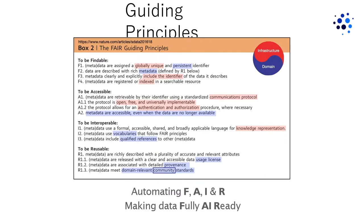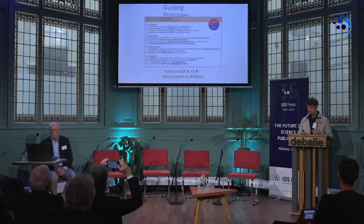The goal is to remove from humans the burden of a lot of data munging that would be required to do findability, accessibility, interoperability, and to get the data reused. There's another clever characterization of that acronym — FAIR is also a great acronym for data that is fully AI ready. You don't need humans to step in and do data munging. It's just ready to go.